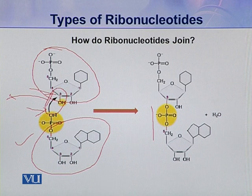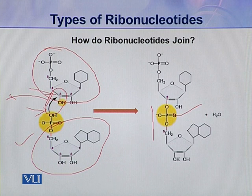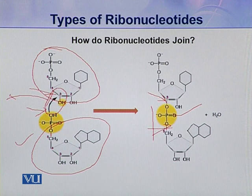These two nucleotides are linked together through phosphodiester linkage. Why is this called phosphodiester linkage? Because here one phosphate group is present, and this phosphate group is linked with one pentose with an ester linkage, and a second ester linkage is also present. So all this is one phosphate and two esters — so it is called phosphodiester.